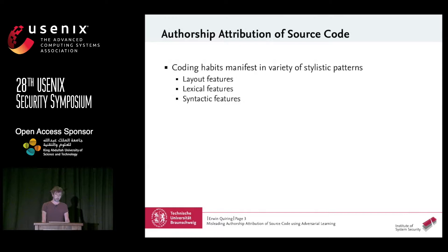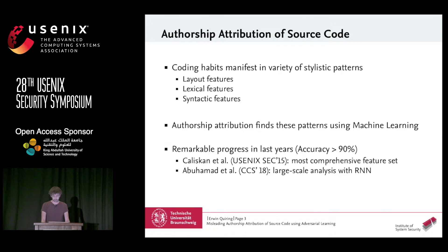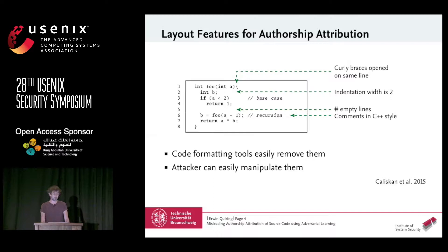Let's shortly recap how authorship attribution works. Coding habits manifest in a variety of stylistic patterns, so we need an expressive set of features for attribution. Three groups are currently used in the research field: layout, lexical, and syntactic features. Authorship attribution finds these patterns by using machine learning. Two notable examples are the work by Kaliskan et al., which has the most comprehensive feature set, and the work by Abu Hamad et al., which performed a large-scale study with recurrent neural networks.